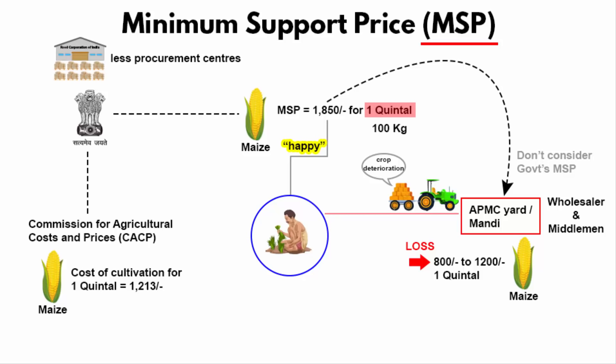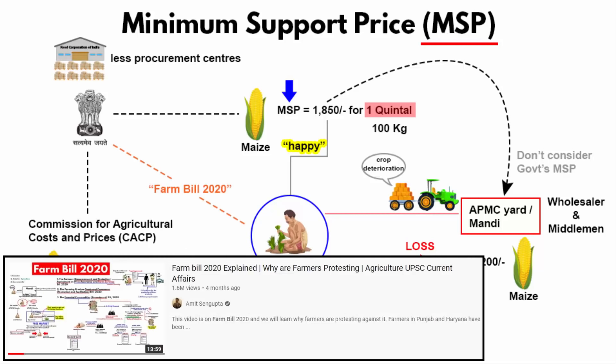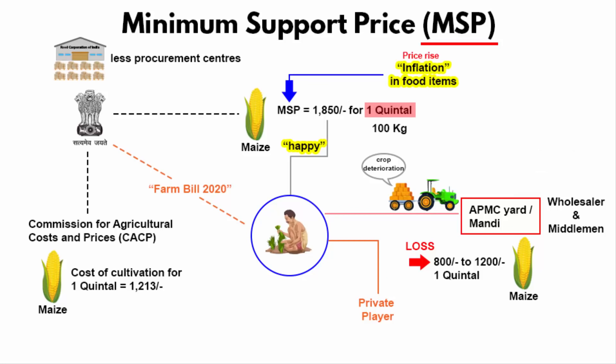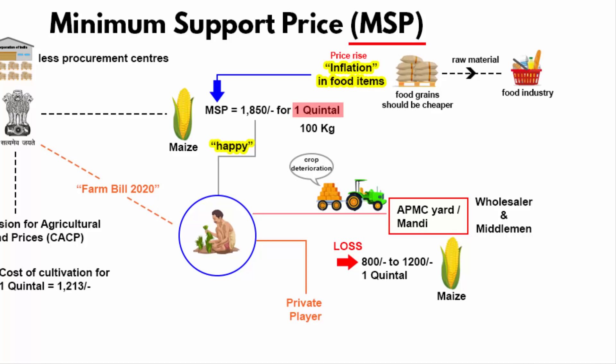The government of India has also realized that simply increasing the MSP is not the solution. That is why the government introduced new farm bills, expected to create an open market for inter-state and intra-state agricultural trade and bring freedom of choice for farmers. The new legislation allows farmers to sell produce directly to any buyer, and farmers can also continue selling to local mandis. If the government keeps increasing the MSP, there will be a rise in food grain prices. Food grains should be cheaper because they provide the industry with raw materials, and the only way forward is by opening the agricultural market to the private sector.